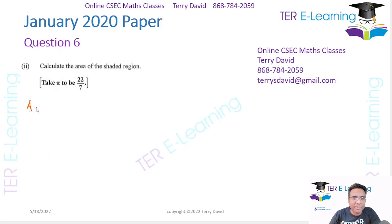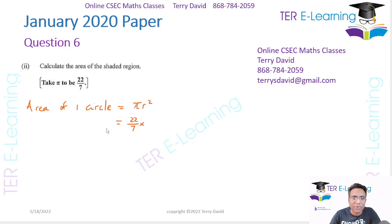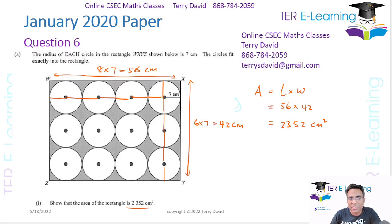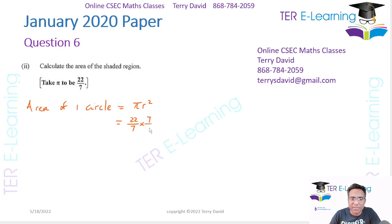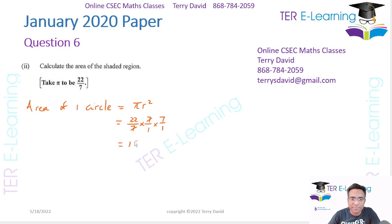So we need to find the area of one circle. Area of one circle is simply pi r squared. They told us to take pi as 22 over 7, so: 22/7 multiplied by the radius squared. The radius of one circle is 7, so it's 22/7 multiplied by 7 squared. The 7s cancel, giving us 22 multiplied by 7, which is 154 cm squared.